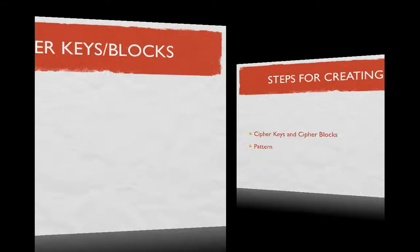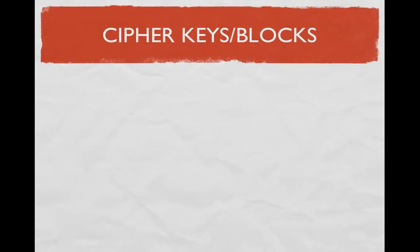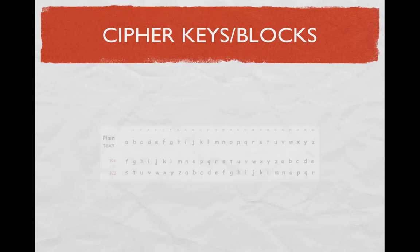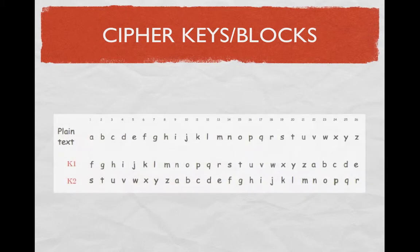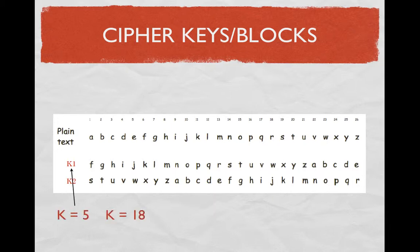So first, with deciding the cipher keys, what I'm going to do is create two cipher blocks I can use to match up our plain text, which is the first line. My two cipher keys are simply numbers, and in this case, I'll choose the number 5 and the number 18.